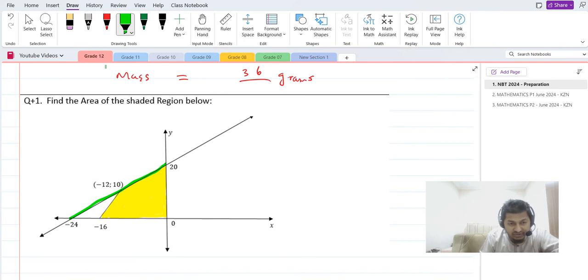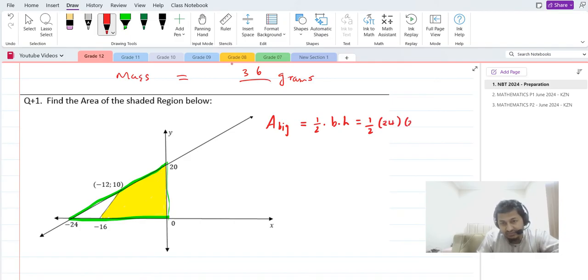Area of the big triangle is equal to half base times perpendicular height. So we're getting half, the base is 24 and the height is 20. If you work out a half of 20 is 10, and we should get 240 here.